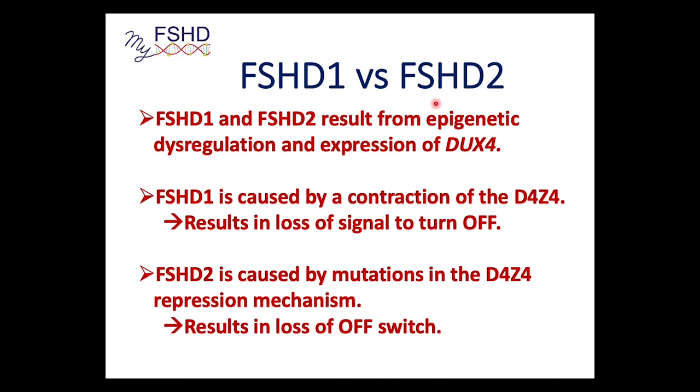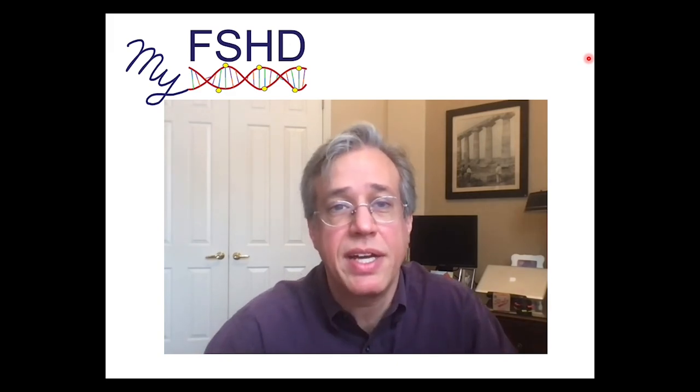Overall, FSHD1 versus FSHD2: they both result from epigenetic dysregulation and expression of DUX4 from the 4q35 D4Z4. FSHD1 is caused by contraction of the D4Z4 — loss of signal to turn off gene expression. FSHD2 is caused by mutations in the D4Z4 repression mechanism, resulting in loss of the off-switch. Same end result, you just get there a different way. All forms — FSHD1, FSHD2, FSHD3, 4, whatever — are all just FSHD, all caused by epigenetic dysregulation of the DUX4 gene in skeletal muscle.